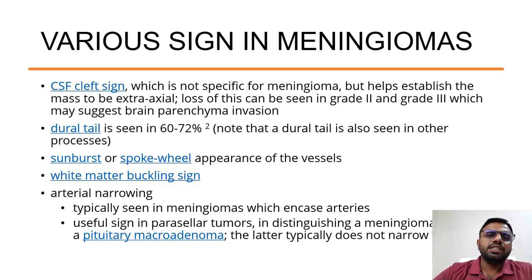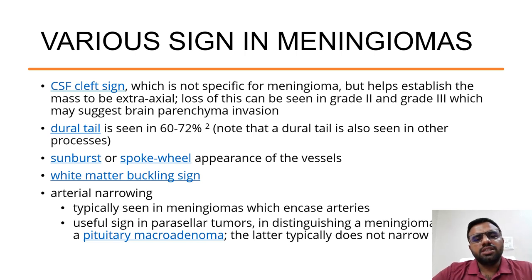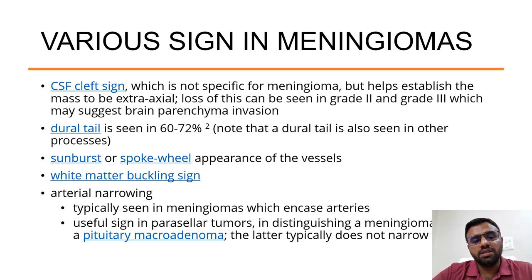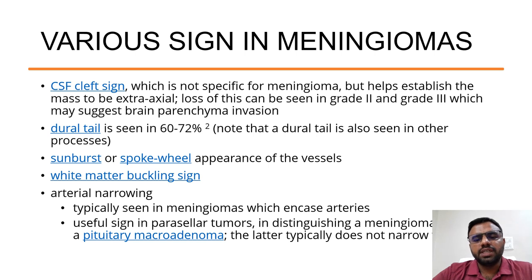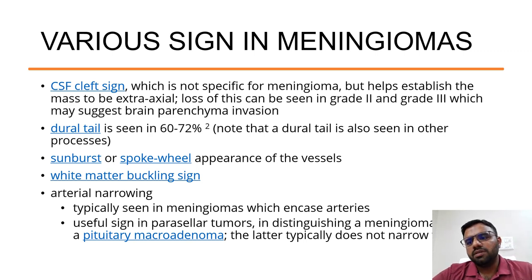Various signs in meningioma: the CSF cleft sign is not specific for meningioma but helps establish the mass as extra-axial; loss of this sign in grade 2 and grade 3 may suggest brain parenchyma invasion. The dural tail sign is seen in 60-72% of cases, though it is also seen in other processes. Additional signs include the sunburst or spoke wheel sign, white matter buckling sign, and arterial narrowing — the latter is typically seen in meningiomas that encase arteries, and is a useful sign in parasellar tumours distinguishing meningioma from pituitary macroadenoma.